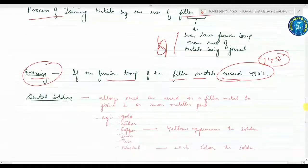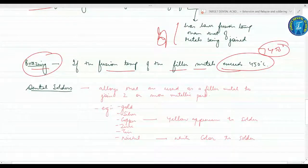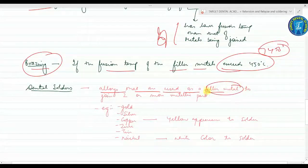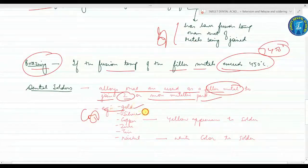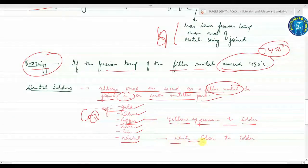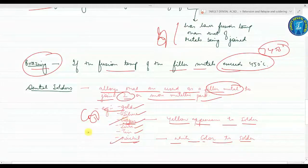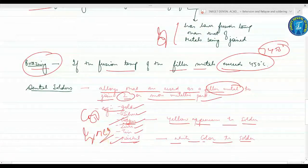Next are the dental solders. Dental solders are alloys used as a filler metal to join two or more metallic parts. Most dental solders are composed of gold, silver, copper, zinc, tin, and nickel. Copper gives a yellow appearance to the solder and nickel gives the white color to the solder - important for your MCQ.